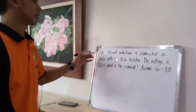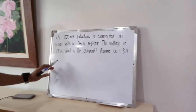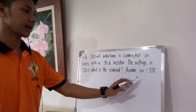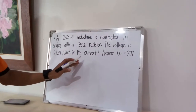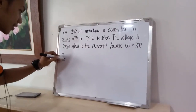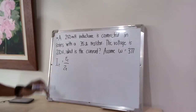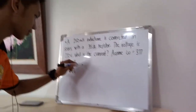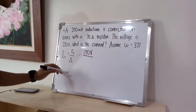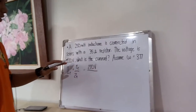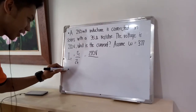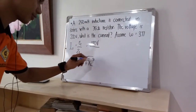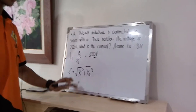Here we have a sample problem. A 250 mH inductance is connected in series with a 35 ohm resistor. The voltage is 220 volts. What is the current? Assume that the value of omega is 377. For getting the current of a series circuit, we have the formula I sub T equals E sub T over Z sub T, where E sub T is the total voltage and Z sub T is the total impedance. For getting the impedance, we have Z equals the square root of R squared plus X sub L squared, where R is the resistance and X sub L is the inductive reactance.